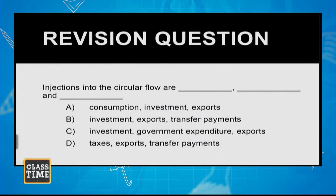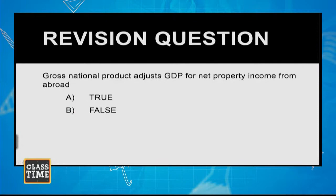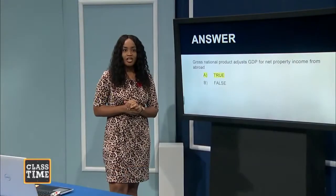The next question asks about injections into the circular flow. Using process of elimination — identify any leakage listed and eliminate that option — the correct answer is C: government spending, investment, and exports all introduce money into the circular flow. Final question: GDP adjusts for net property income from abroad — is this true or false? The answer is true.